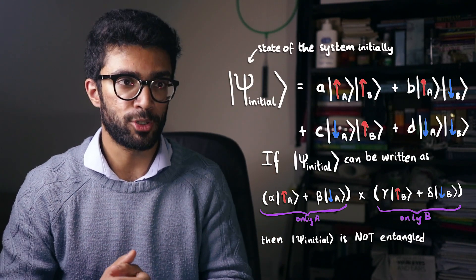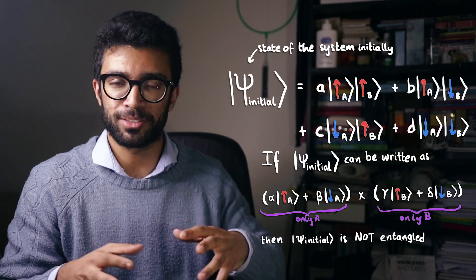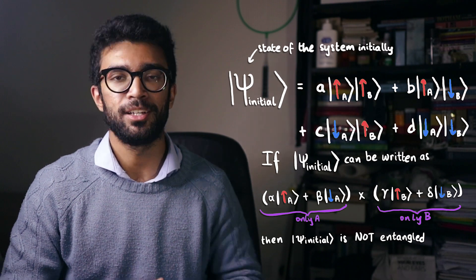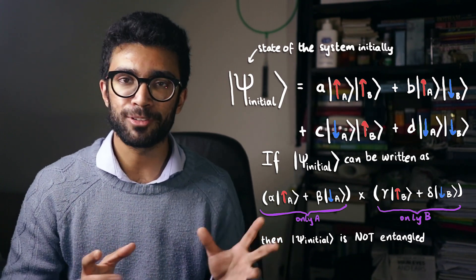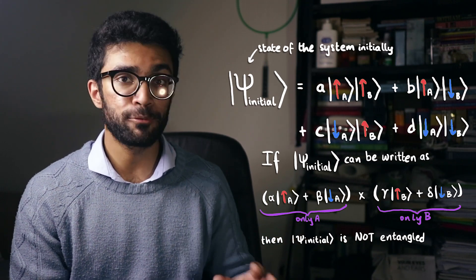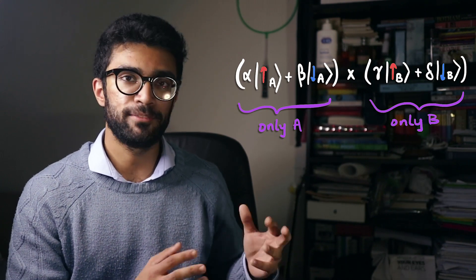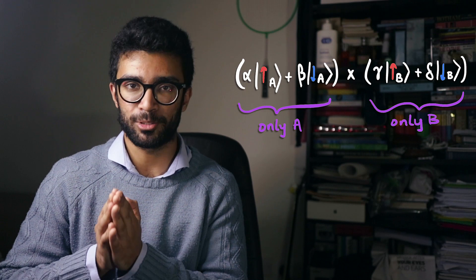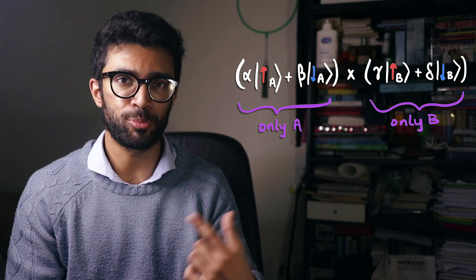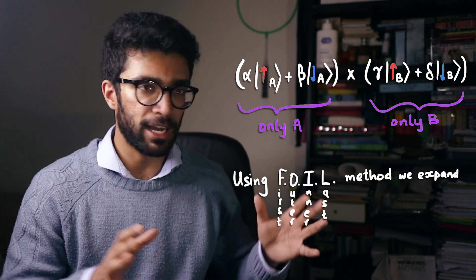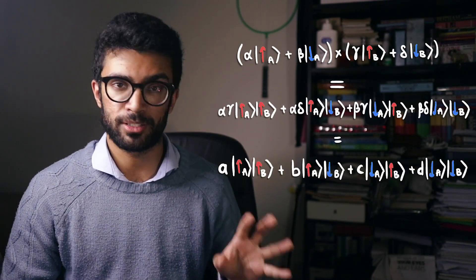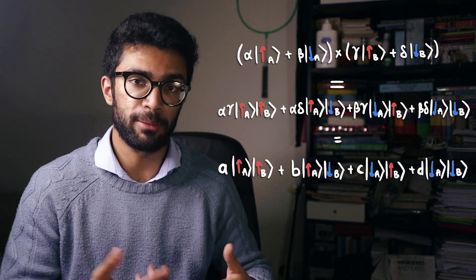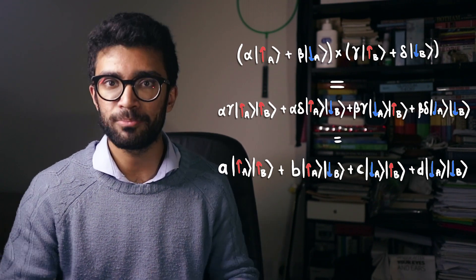We said earlier that if we could mathematically separate the state into one bit talking about particle A multiplied by one bit talking about particle B, then this is a separable state — the opposite of entangled. To understand mathematical separability, we go back to a little high school mathematics — specifically multiplying out brackets. Our state will be mathematically separable if we can write it as one bracket containing only information about particle A multiplied by a second bracket containing only information about particle B. If you remember the FOIL method to expand out these two brackets, when we do that it looks like: some number times A-up B-up, plus some number times A-up B-down, plus so on and so forth — the general state for our quantum system of particles A and B.